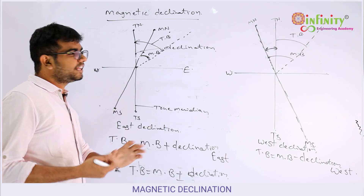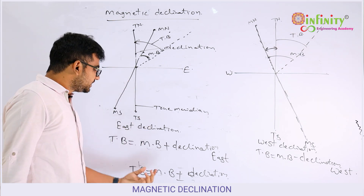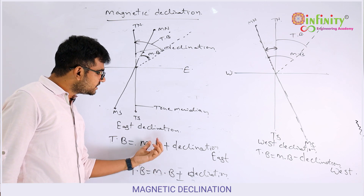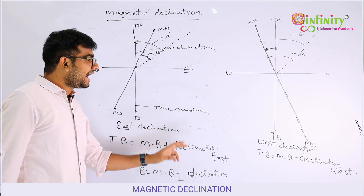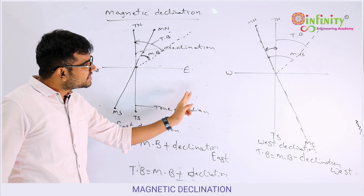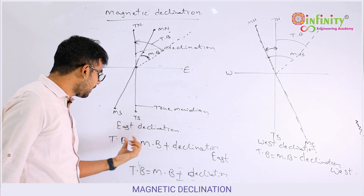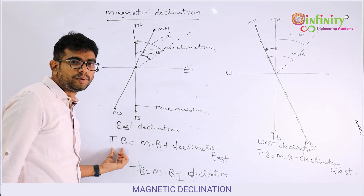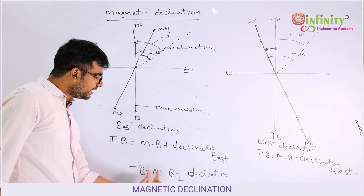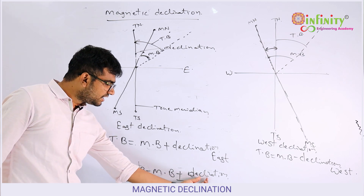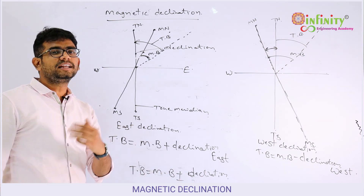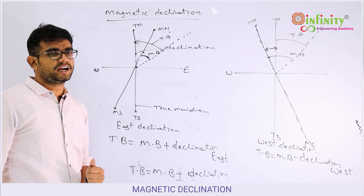In exam questions, they will give the magnetic bearing of a line along with whether it is east or west declination, and you have to find the true bearing. Sometimes they will give the true bearing and the declination, and you have to find the magnetic bearing. That is how questions will be asked on this topic.